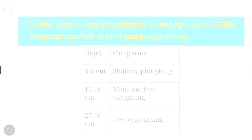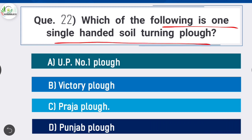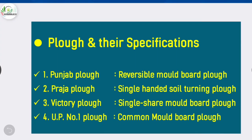Question 22: Which of the following is a single-handed soil turning plow? Option C is correct: Praja plow. Punja plow is a reversible moldboard plow. Praja plow is a single-hand soil turning plow. Victory plow is a single-share moldboard plow. UP No. 1 plow is a common moldboard plow.